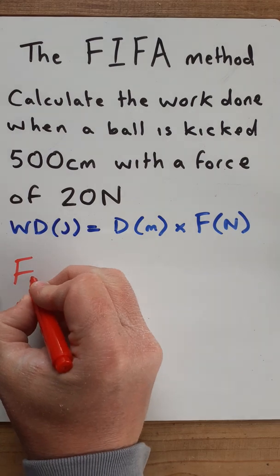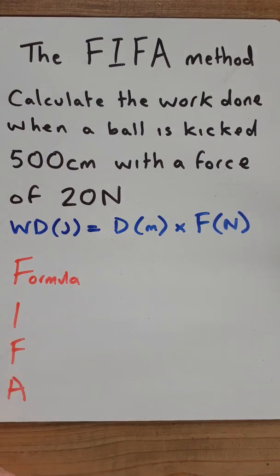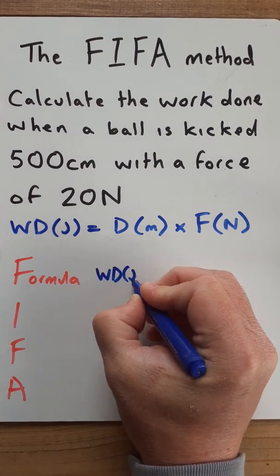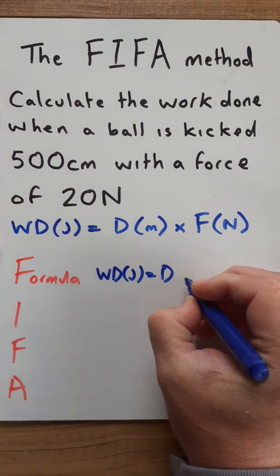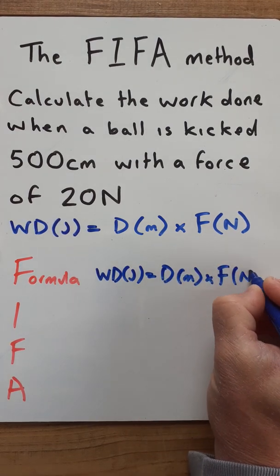The first F stands for formula and so at that point what I'm really asking you to do is to rewrite the formula. So you write WD which is joules is equal to distance in meters times force which is measured in newtons.